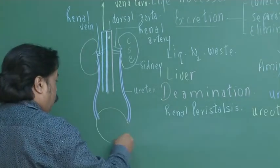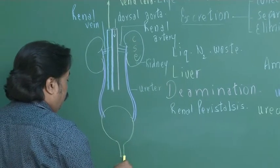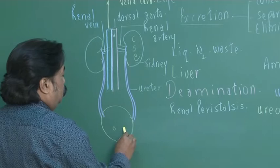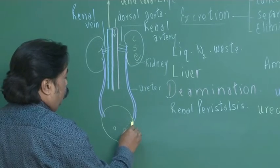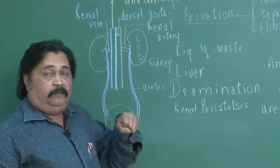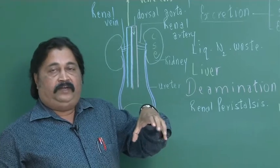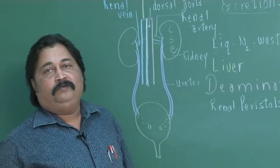They carry the urine drop by drop towards the urinary bladder. See over here, this is the opening of ureter. They obliquely open like this into the bladder. Urinary bladder is a distensible sac. It gets inflated with the collection of urine.